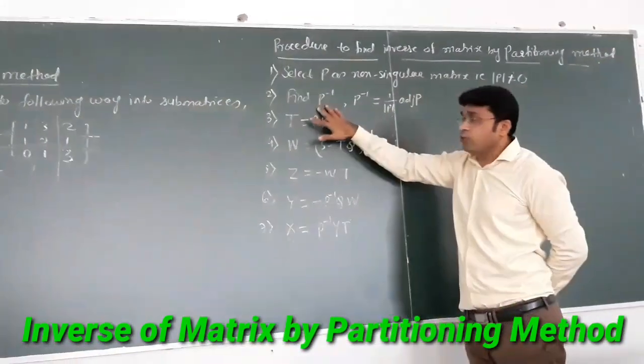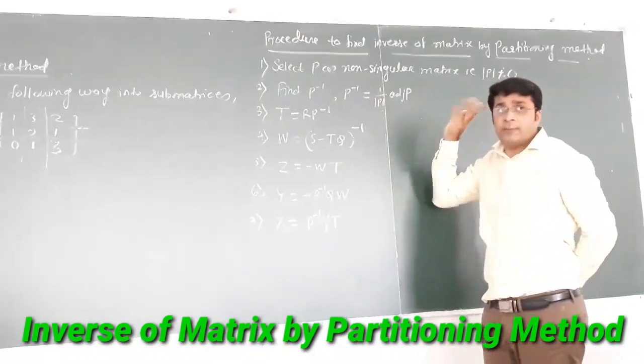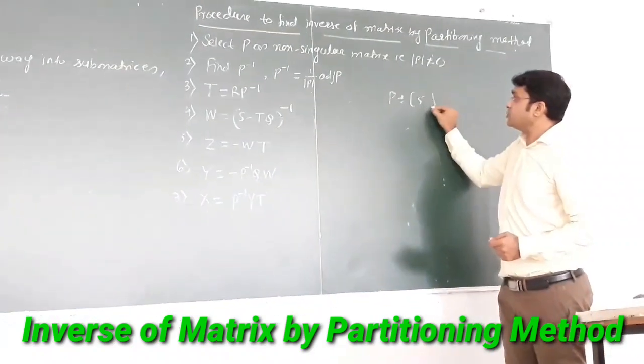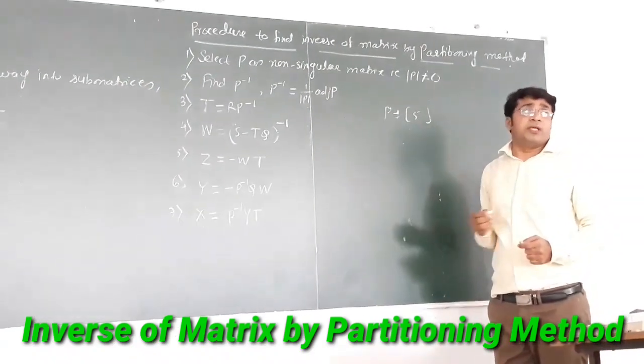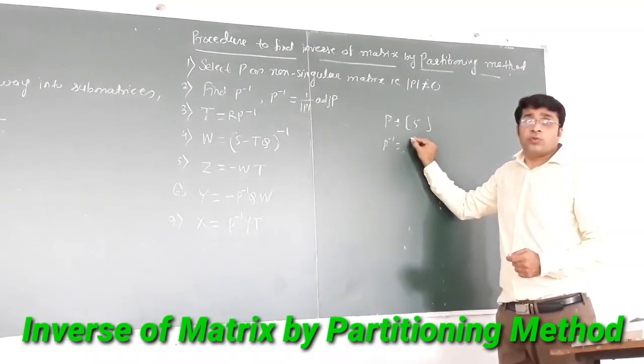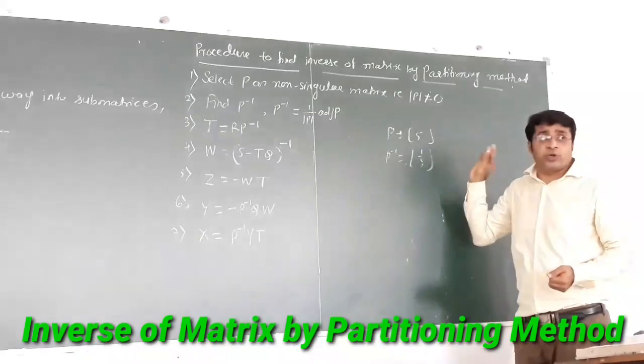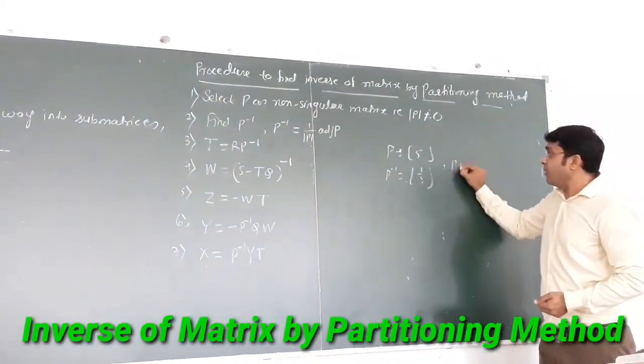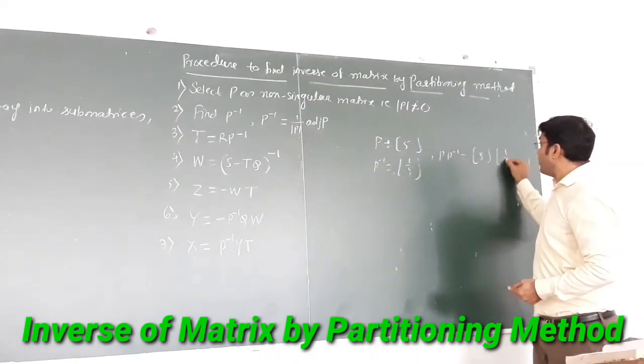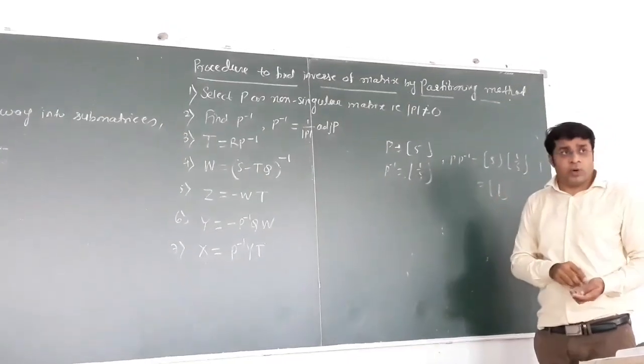Then we find out P inverse. If I am having that matrix as [5], what will be the inverse for this? P inverse equals 1 by 5, because if I multiply P into P inverse, 5 into 1 by 5, this will be the identity matrix of order 1 by 1.